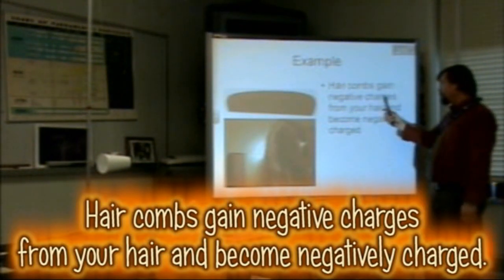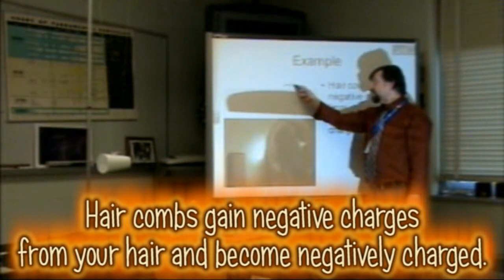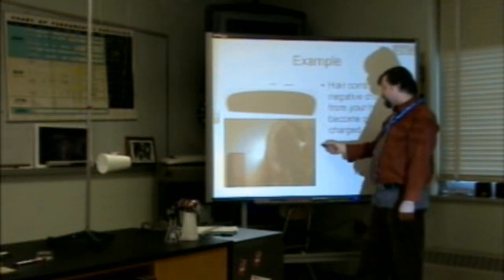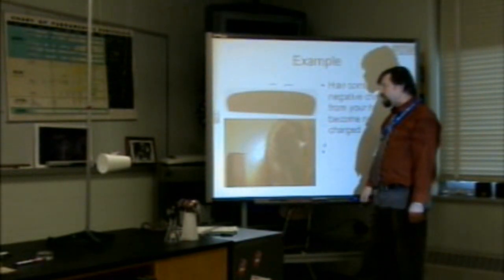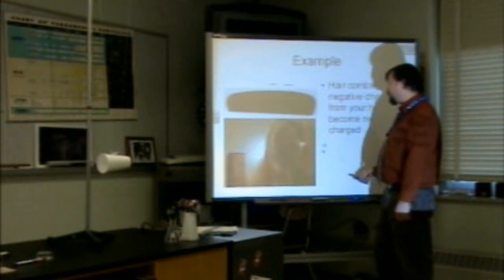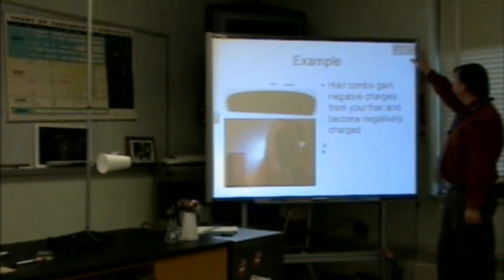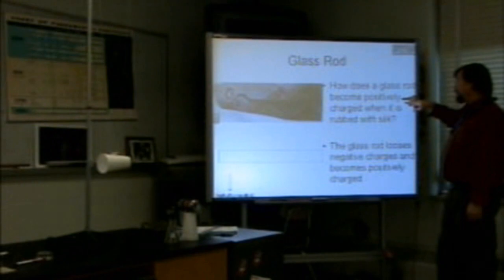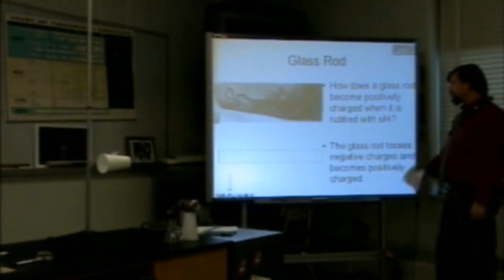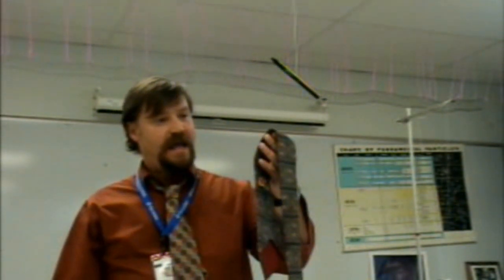Hair combs gain negative charge from your hair and become negatively charged. The hair is left with an overall positive charge, and the comb gains an overall negative charge. When you rub a glass rod on silk, you take the electrons off the glass rod, giving it a positive charge, and you gather the electrons on the silk, giving the silk a negative charge.